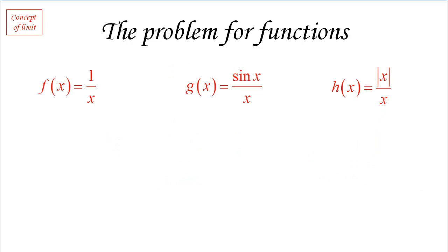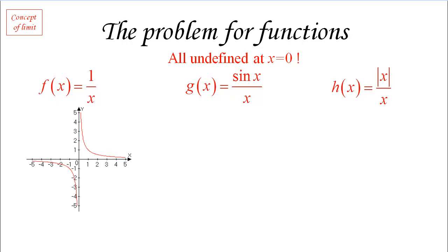To see the problem with limits even better, consider three functions. They're all undefined at x equals 0, and x equals 0 is the only value for which any one of them is undefined. Everywhere else we can compute the function. But let's look at their graphs. For 1 over x, as we scan left to right through x equals 0, our point gets pushed down, eventually disappears, and then pops up on the other side. You might say it's going to infinity — but that's exactly what we need to find out.